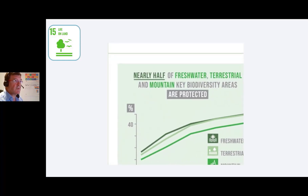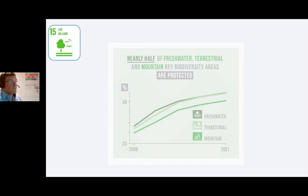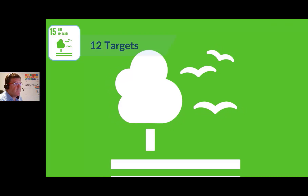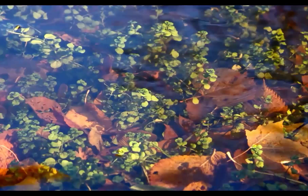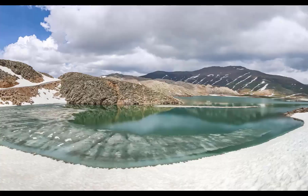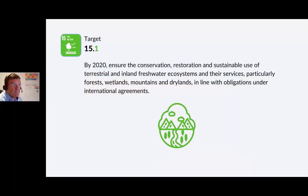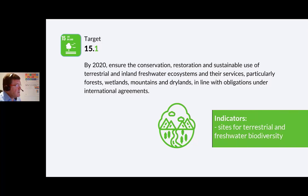Nearly half of freshwater, terrestrial and mountain key biodiverse areas are protected and need to be protected. There are 12 targets for Life on Land. Target 15.1: By 2020, ensure the conservation, restoration and sustainable use of terrestrial and inland freshwater ecosystems and their services, particularly forests, wetlands, mountains and drylands, in line with obligations under international agreements. Our global ecosystems are all interconnected, and terrestrial ecosystems have very close connections with inland freshwater ecosystems. The indicator is forest area as a proportion of total land, and proportion of important sites for terrestrial and freshwater biodiversity covered by protected areas by ecosystem type.